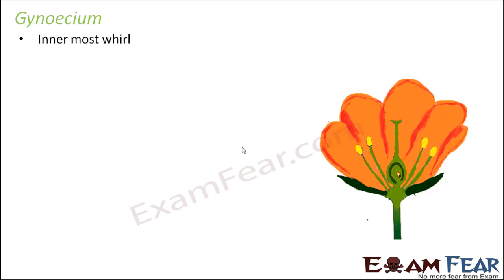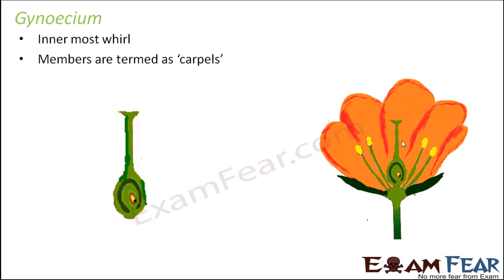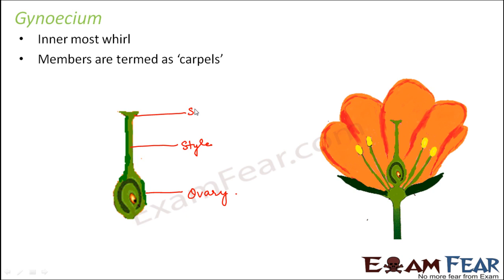The fourth whorl is Gynoecium, which is the innermost and central whorl of the flower. Members are termed as carpels. The structure of a carpel has three parts: a swollen base called the ovary, a tube-like structure called the style, and the upper portion called the stigma. So stigma, style, and ovary are the three important parts of a carpel.